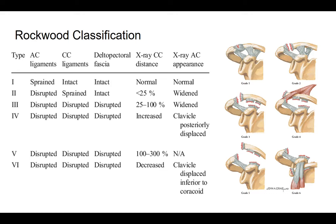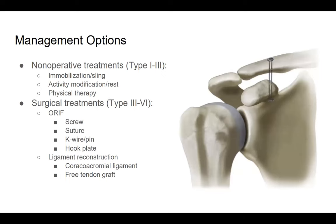The Rockwood classification is the most common system for AC joint injuries. Type 1: AC ligament strained, CC ligament intact, normal CC distance. Type 2: AC ligament disrupted, CC ligament disrupted, less than 25 percent increase in CC distance. Type 3: 25 to 100 percent increase in CC distance. Type 4: posterior displacement of the clavicle. Type 5: 100 to 300 percent displacement. Type 6: inferior displacement of the clavicle relative to the coracoid — the rarest type.